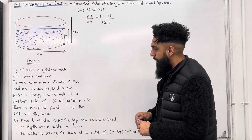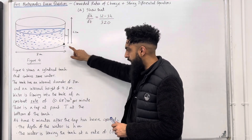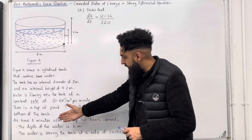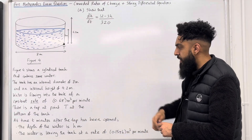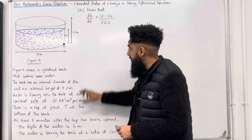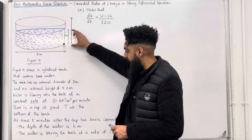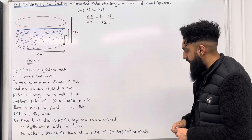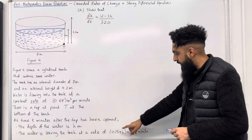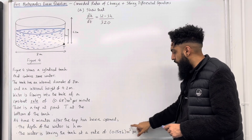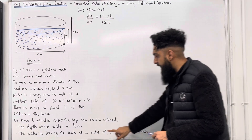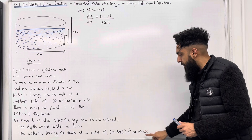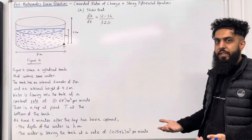There is a tap at point T at the bottom of the tank. At time t minutes after the tap has been opened, the depth of the water is h metres, as indicated in Figure 4. The water is leaving the tank at a rate of 0.15π h metre cubed per minute. Again, the word rate and looking at the units — metre cubed per minute — that indicates dV/dt.